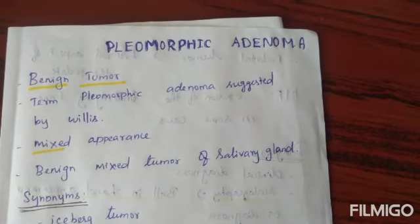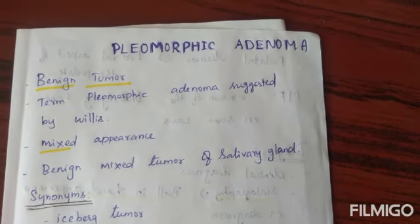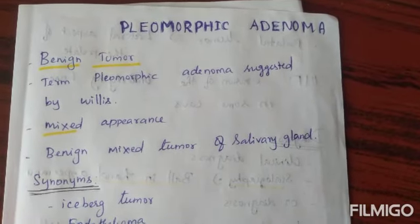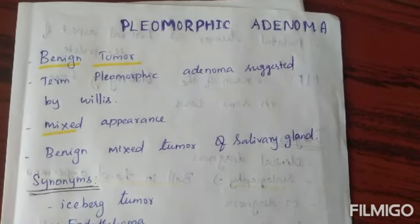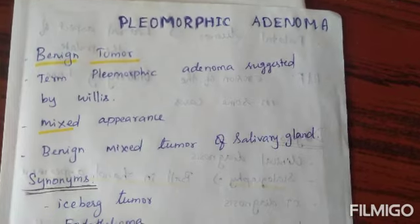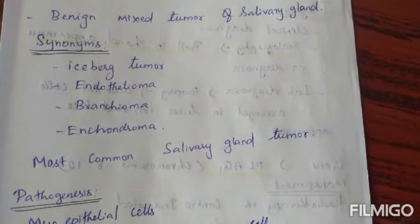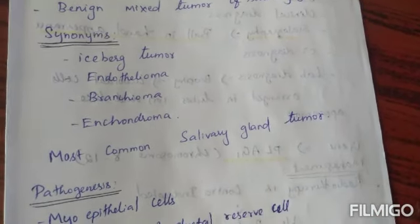Pleiomorphic adenoma is a benign tumor. This term, pleiomorphic adenoma, was suggested by Willis. It has a mixed appearance, so it is also called benign mixed tumor of the salivary gland. Synonyms of this condition include iceberg tumor, endothelioma, branchioma, and enchondroma.